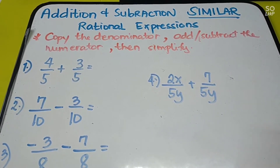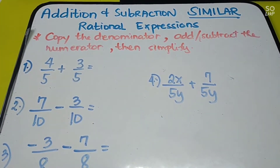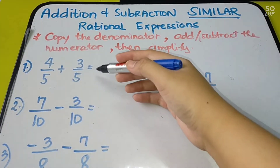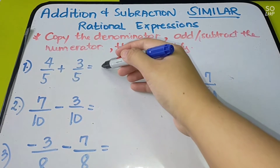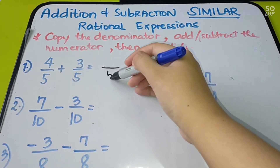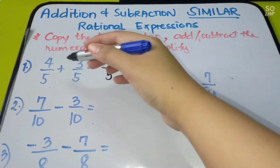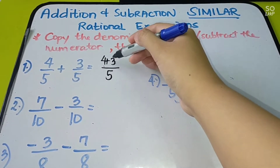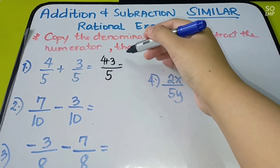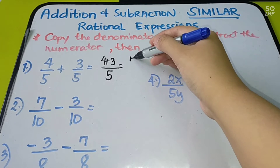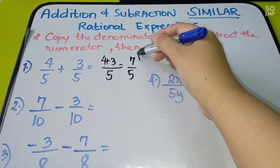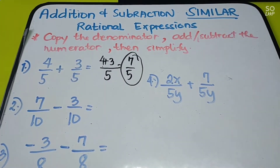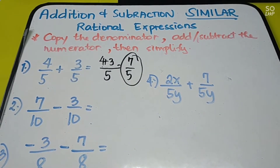Let us have number one. We have 4 over 5 plus 3 over 5. Since we have similar denominators, just copy the denominator 5, then add 4 plus 3. So we have 4 plus 3, the answer is 7 over 5. This is now your answer. That's how simple similar rational expressions are.